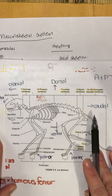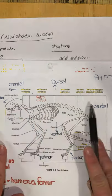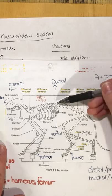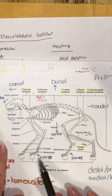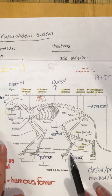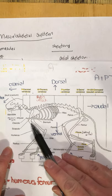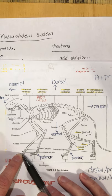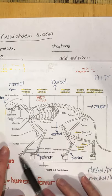On this diagram we already have some things labeled: cranial meaning towards the head, caudal meaning towards the tail, dorsal meaning towards the back, ventral meaning towards the belly. We have palmar — the bottom of the front feet — and plantar — the bottom of the hind feet. Distal is furthest from the point of attachment, and proximal is nearest to the point of attachment on a limb.